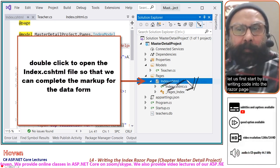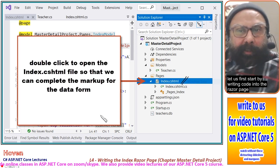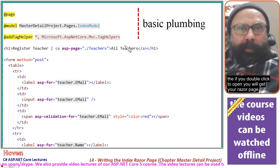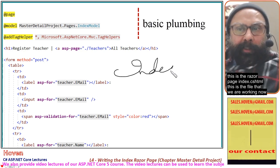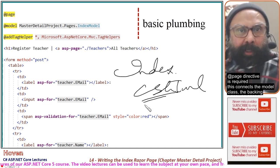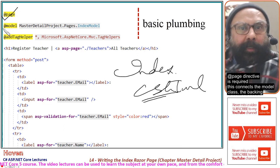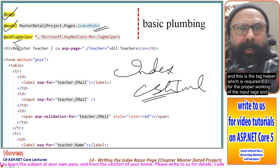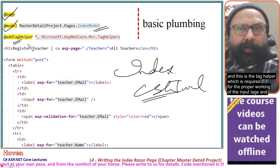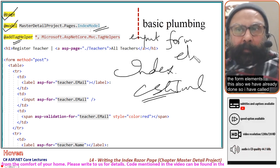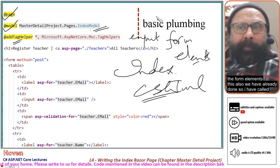Let us first start by writing code into the razor page. If you double-click to open, you will get your razor page — this is the Index.cshtml file. The @page directive is required. This connects the model class (the backing class, IndexModel) that we have discussed in many previous lectures. And this is the tag helper which is required for the proper working of the input tags and form elements.